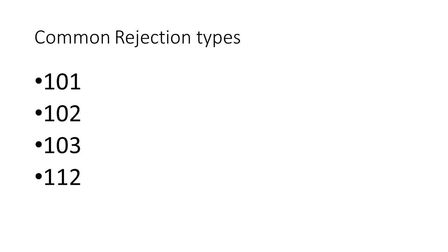So these are the codes, or sections of law, for the common rejections in U.S. patent law. And rather than read you the official definition, because you can look that up, I'm going to try to explain it in basic, easy-to-understand terms.